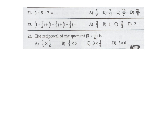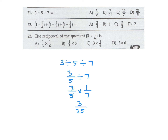3 divided by 5 divided by 7. That's (3/5) divided by 7; invert and multiply by 1/7, giving 3 over 35. Number 21 is A.